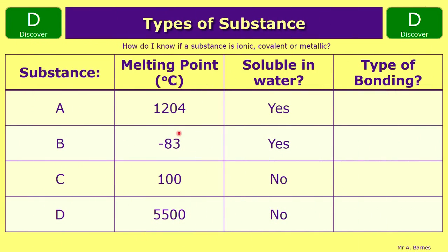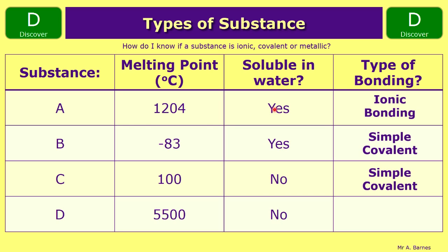Going back to what we looked at before: we had worked out that B and C were both simple covalent, but we didn't know about A or D. If A has a high melting point and is soluble in water, it has to be ionic bonding, because we know metallic and giant covalent are insoluble. For D, it has a high melting point and is insoluble, so it could be ionic, giant covalent or metallic — but we can't narrow it down further with this information alone.